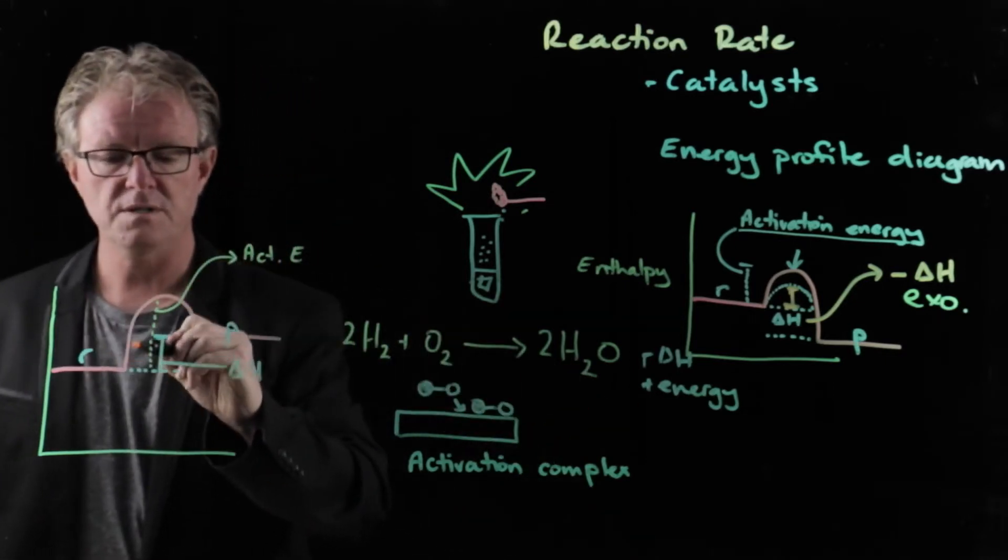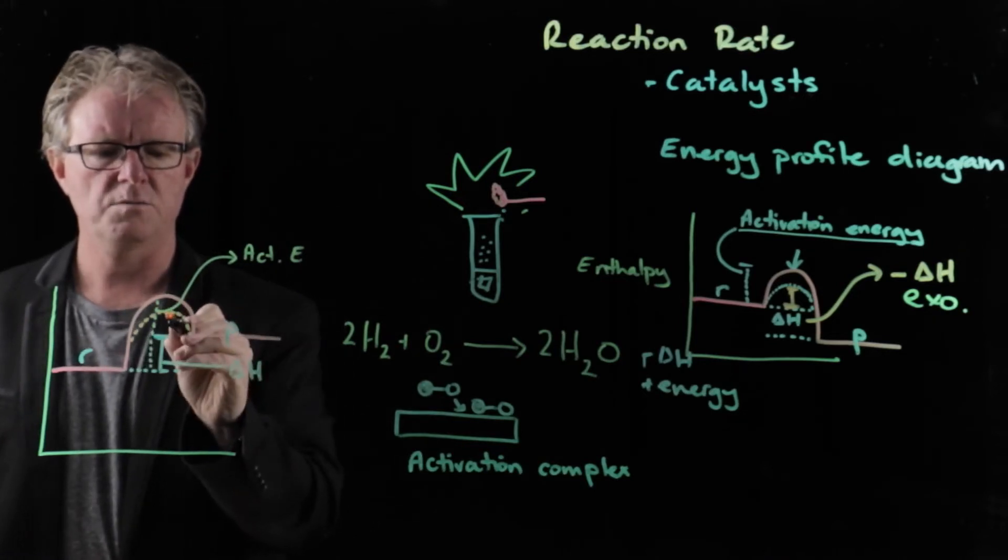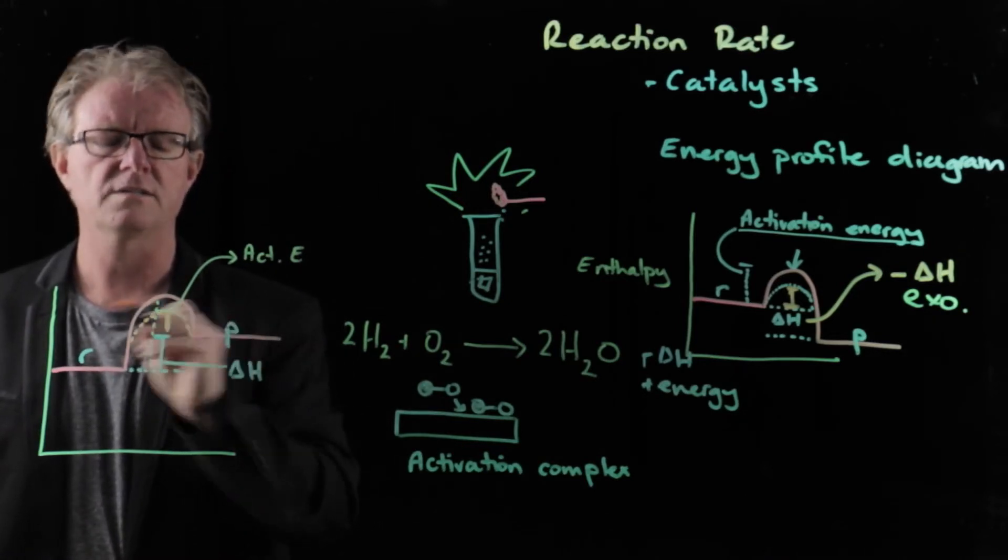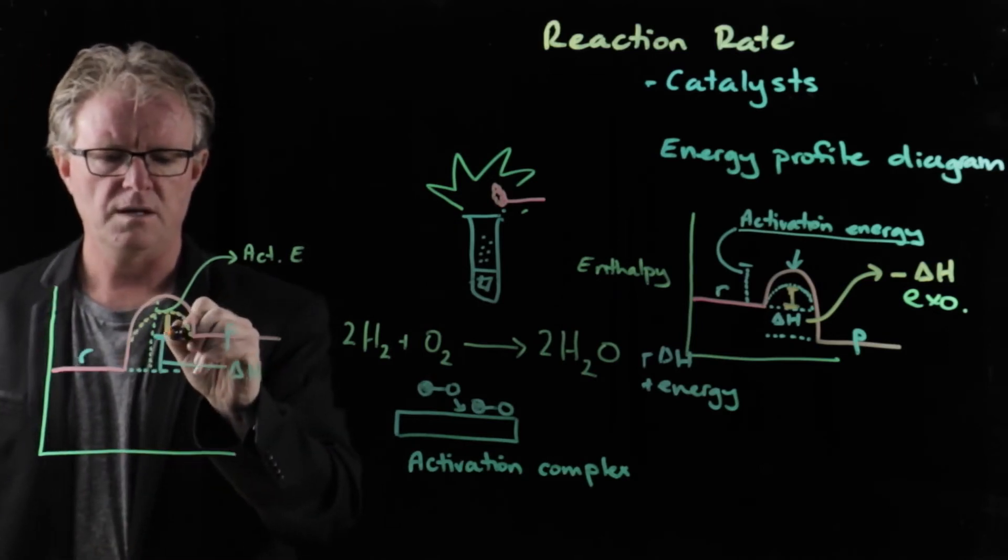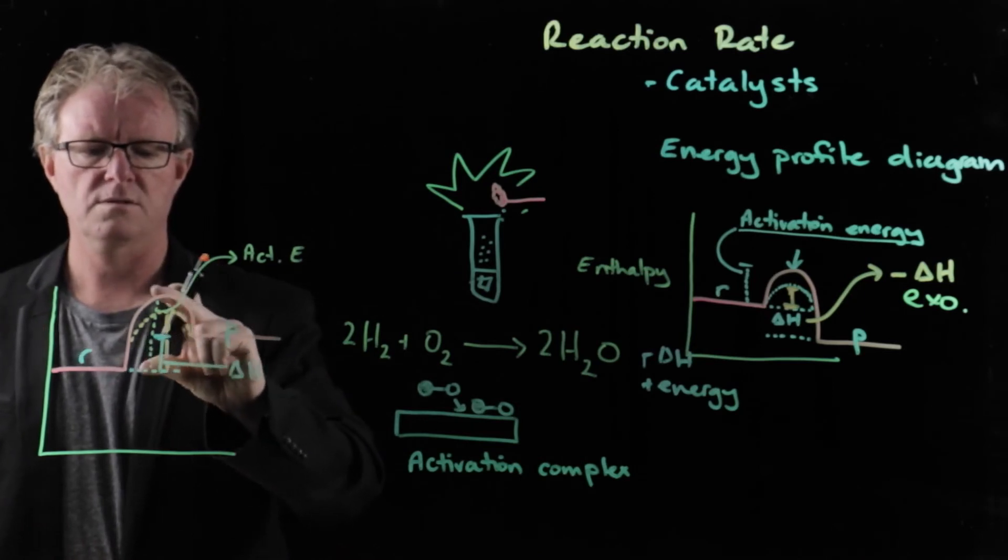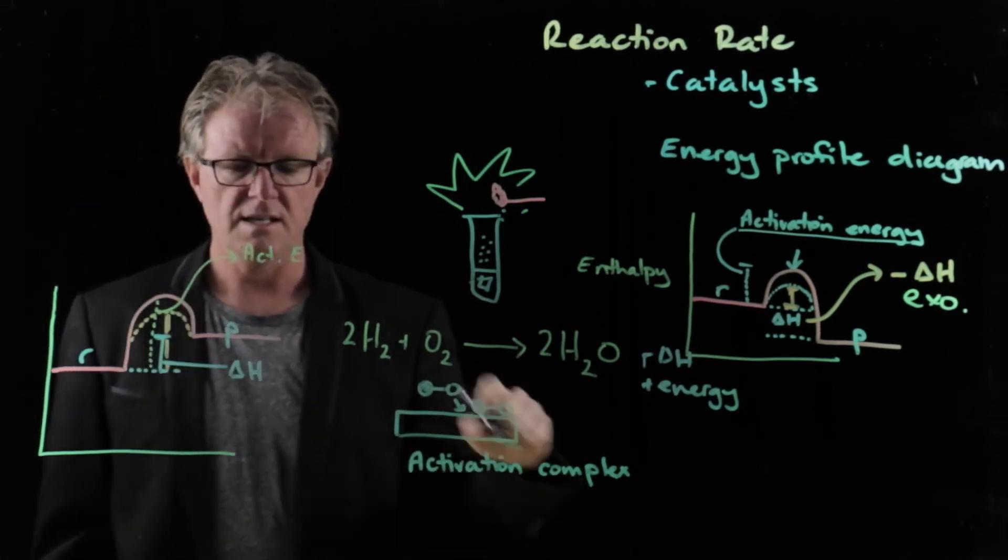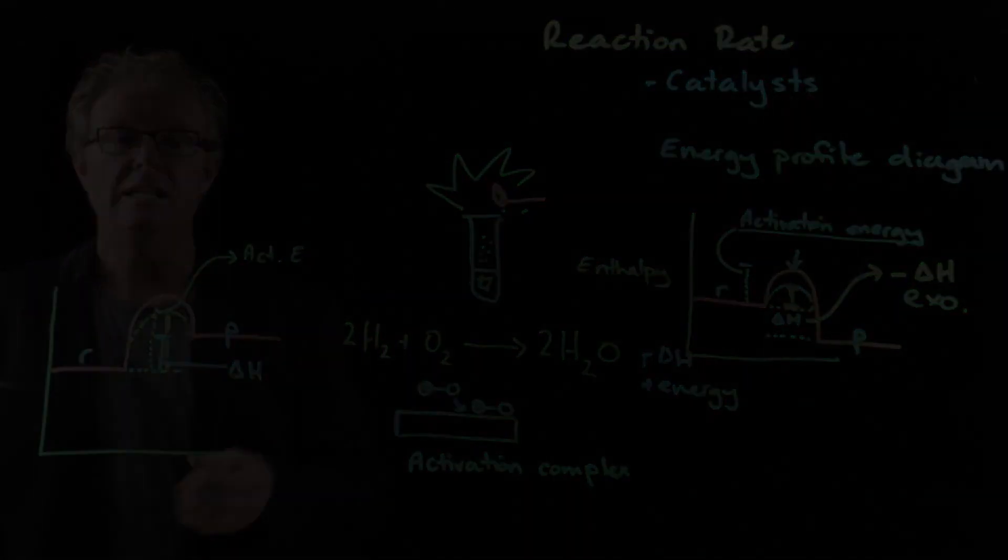And if we happen to have a catalyst present, then we can make that smaller. So this would be the activation energy if a catalyst was present. Just that bit there. And going down, of course, to the bottom there. So it's a small amount. So that is an endothermic reaction. So there you go. All the stuff that you need.